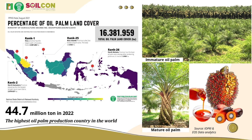Advantageous for people, profit, and planet is the core of sustainable agriculture that everyone wants to achieve, likewise with oil palm plantation. Oil palm is a versatile commodity with up to 40% worldwide consumption, majorly produced on 16.3 million hectares of land in Indonesia. As you can see in the picture, oil palm grows from seedlings to immature and mature stages, with harvested fresh fruit bunches extracted to palm oil.